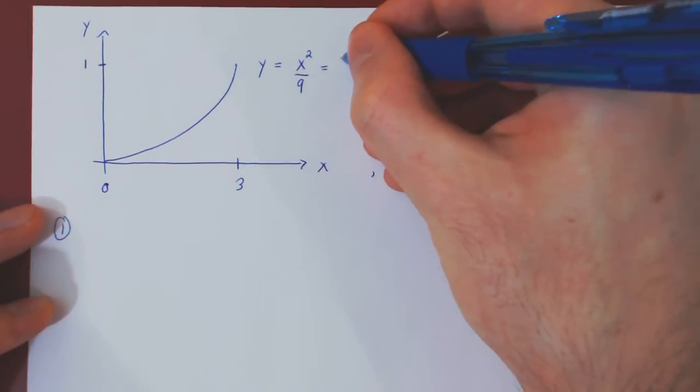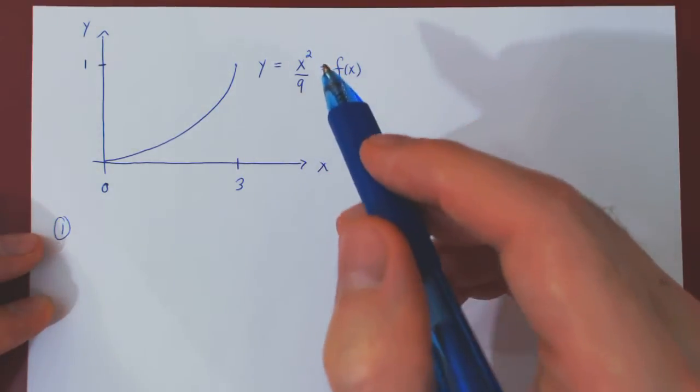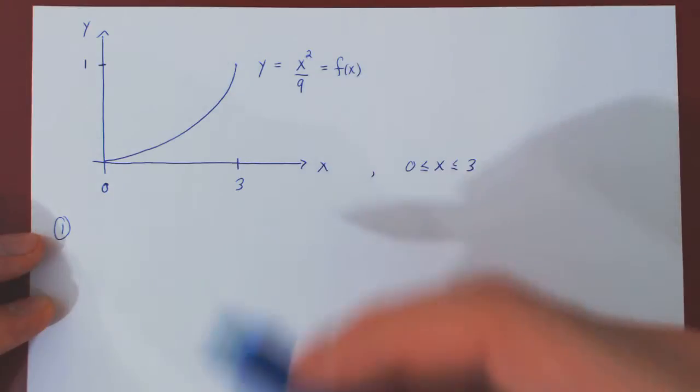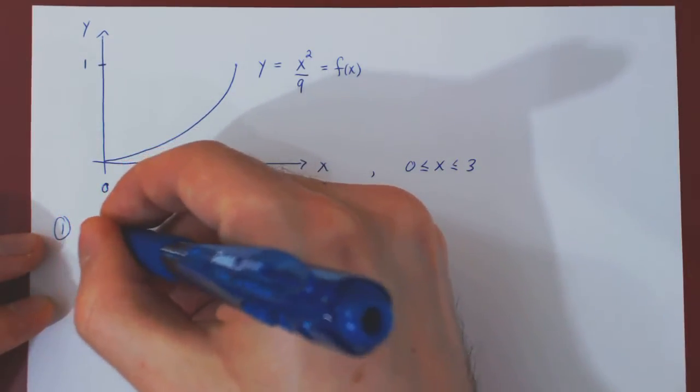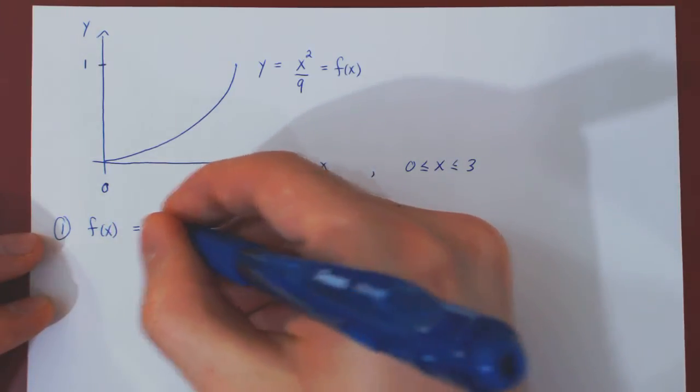So this is our f of x, x squared over 9. The first condition is, as the density function returns probabilities, it must be non-negative. So is f of x at least as big as 0 over the interval?